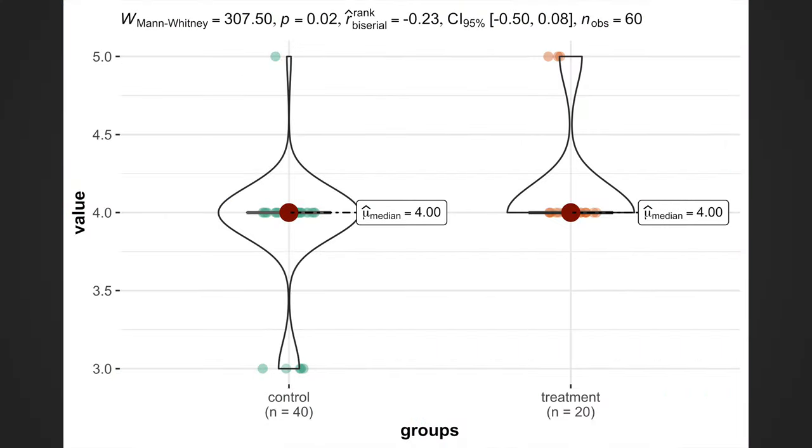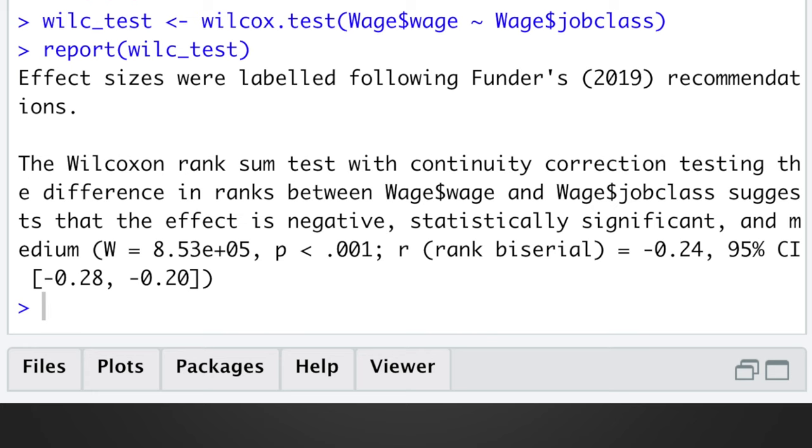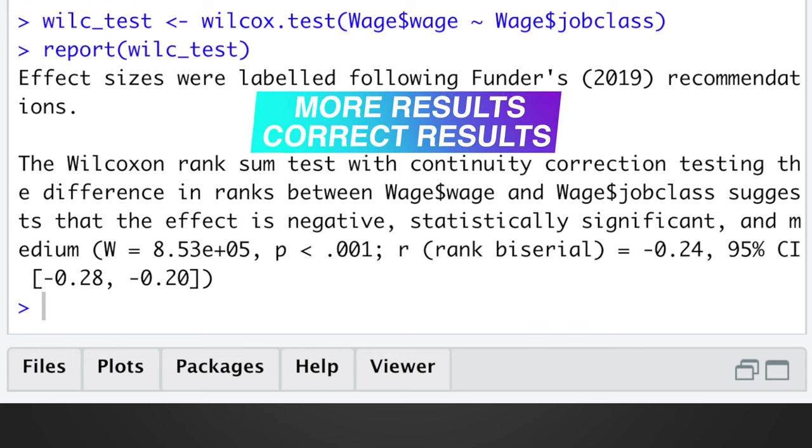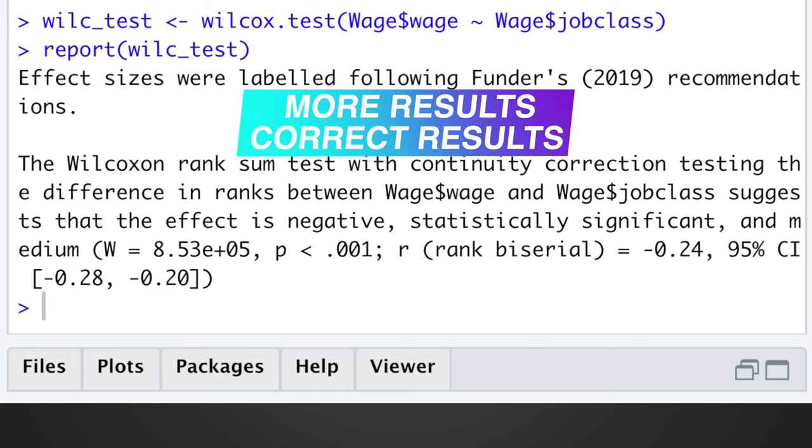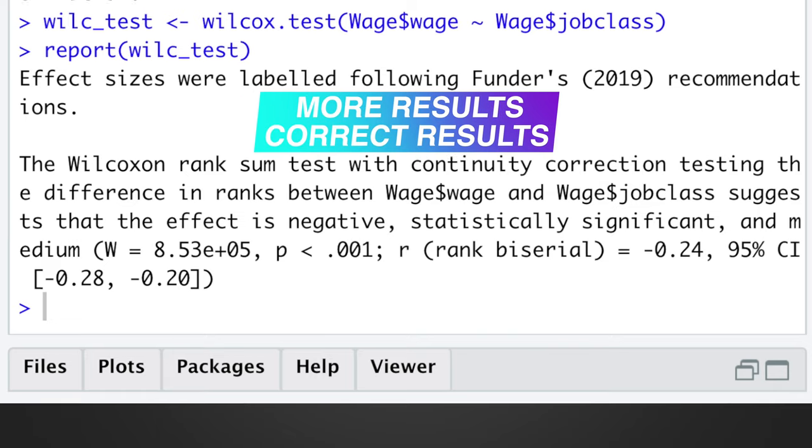In fact, the difference in ranks can be significant even when medians are identical. Here again, report function applies a rank biserial correlation coefficient as a suitable effect size for Wilcoxon rank sum test with a reference. And as you can see, report package not only produces more results in a suitable for publication form, but also ensures a correct interpretation of these results.